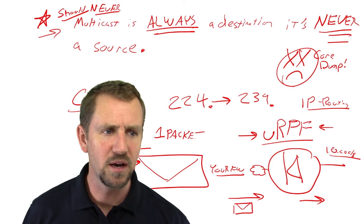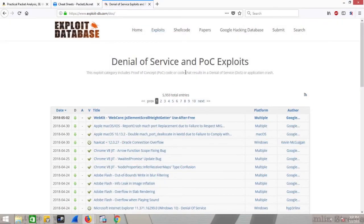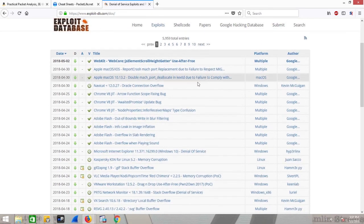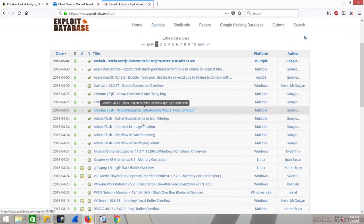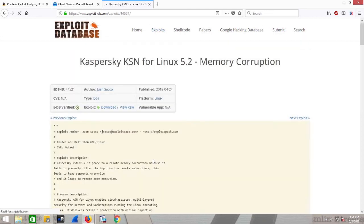When we look at denial of service and what they call proof-of-concept exploits, a lot of times these are bugs that other researchers have discovered, and they go, here's Kaspersky antivirus for Linux. We found a way to do memory corruption.